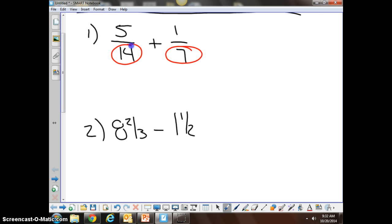So what we're going to do is we're going to look at both denominators, and we're going to find the least common multiple of our denominators. We know that 14 and 7 have a common multiple of 14, it is the least common multiple as well.